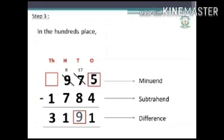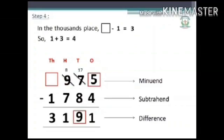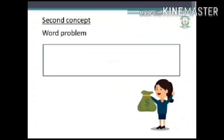Step 3: In the hundreds place, 8 minus 7 is equal to 1. Since 8 is greater than 7, you can subtract easily. Step 4: In the thousands place, dash minus 1 is equal to 3, so adding 1 plus 3 is equal to 4 to find the minuend. Write 4 in the thousands missing column.